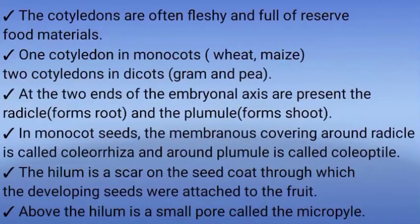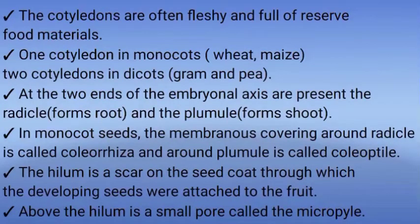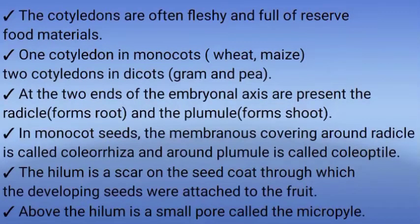During germination of the seed, the radicle forms the root system and the plumule forms the shoot system. In monocotyledonous seeds, the membranous covering around the radicle is called coleorhiza and around the plumule is called coleoptile.